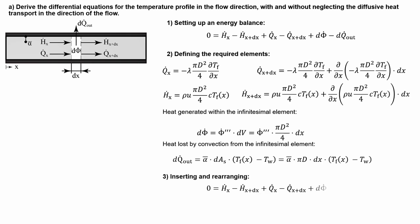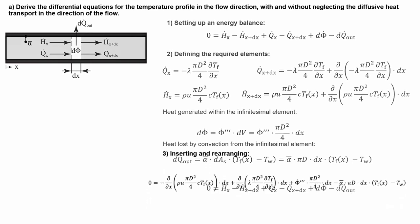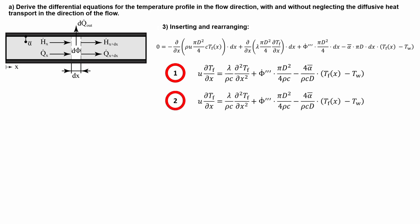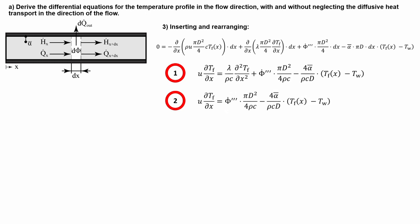Then we get to the third step, which is substituting all terms into the balance and rewriting it to make it look cleaner, which eventually yields an expression describing the differential equation for the temperature profile in the direction of the flow, including the effect of diffusive heat transport. The second equation we had to derive was the differential equation for the temperature profile where we neglect diffusive heat transport. For this reason, the diffusion term can be cancelled out, and we can rewrite this expression using the following result. This example shows how the differential equation for the temperature profile in the flow direction can be found from an energy balance of an infinitesimal element.